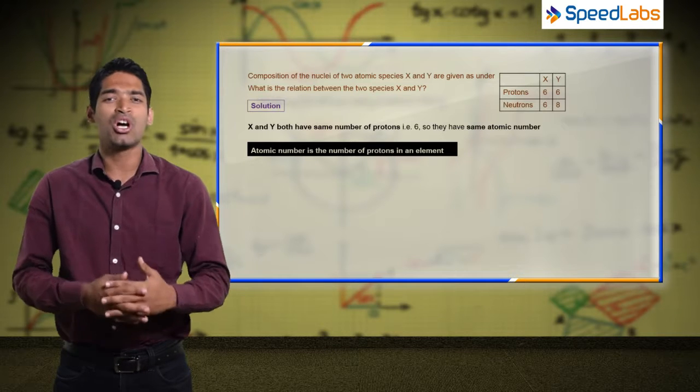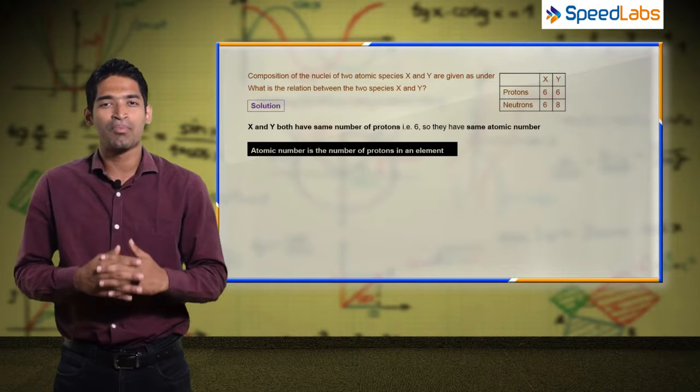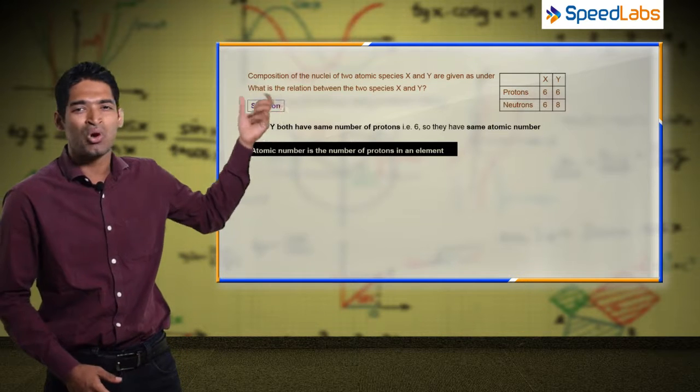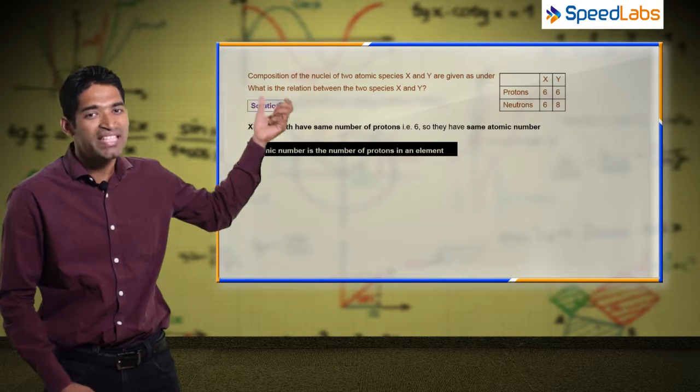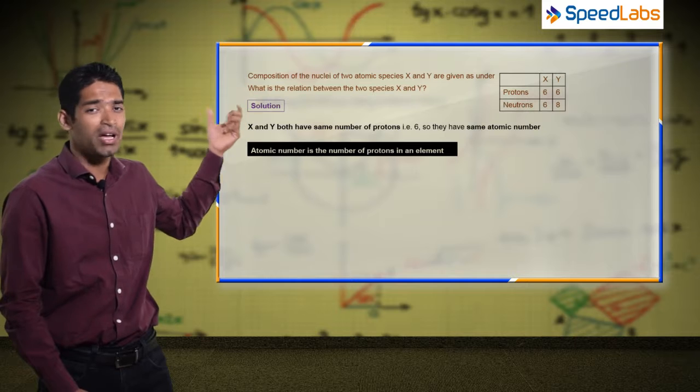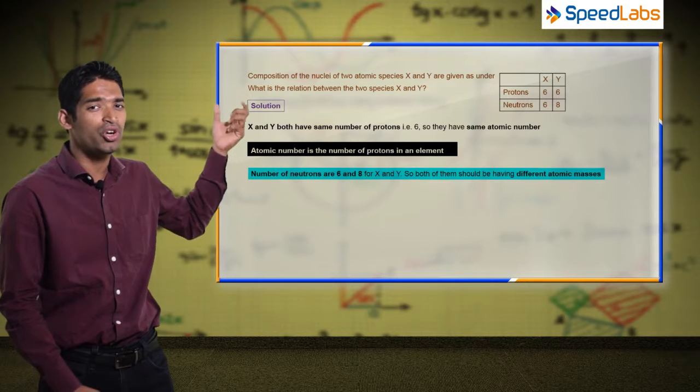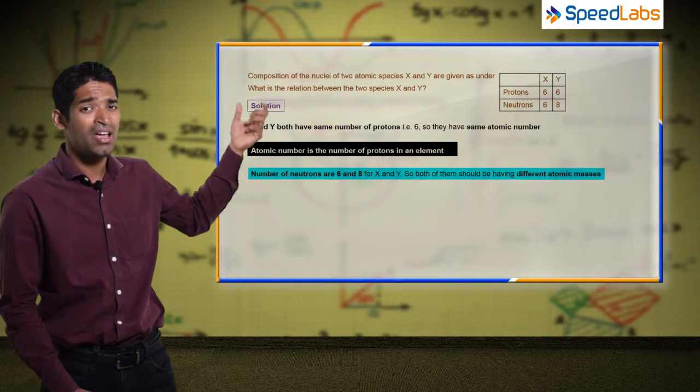Atomic number is the same because atomic number is the number of protons in an element. So if both have six protons, and regarding the number of neutrons, the number of neutrons are six and eight for X and Y.